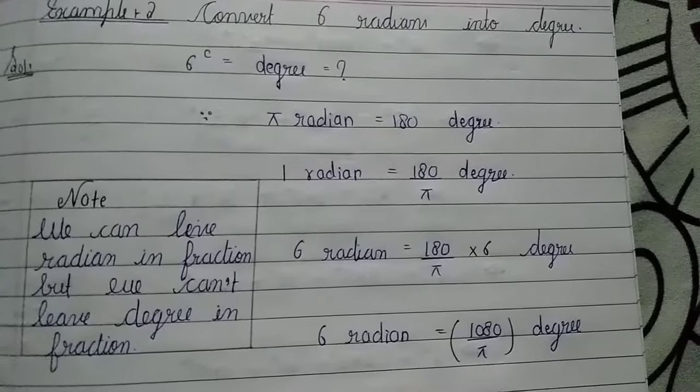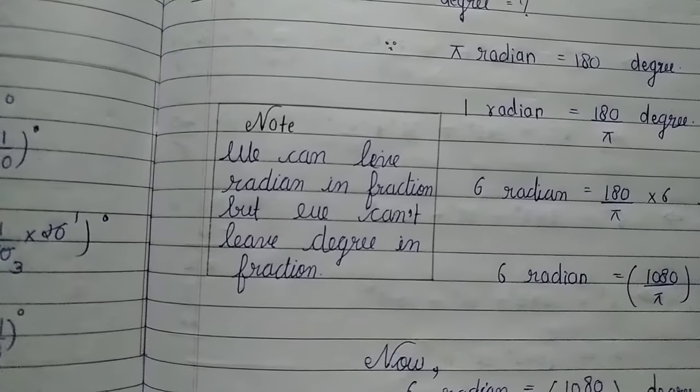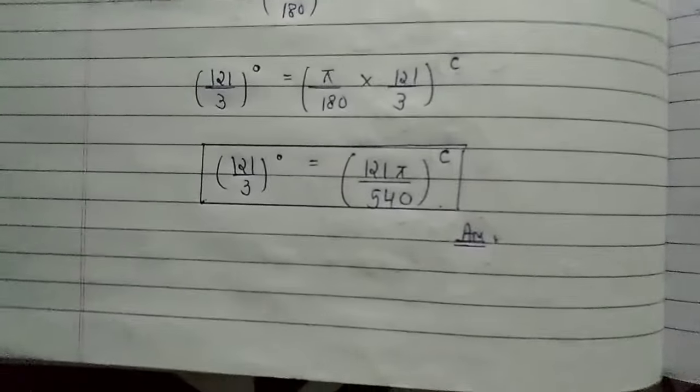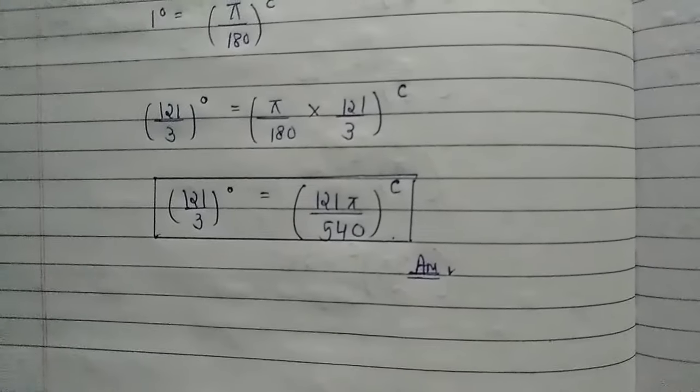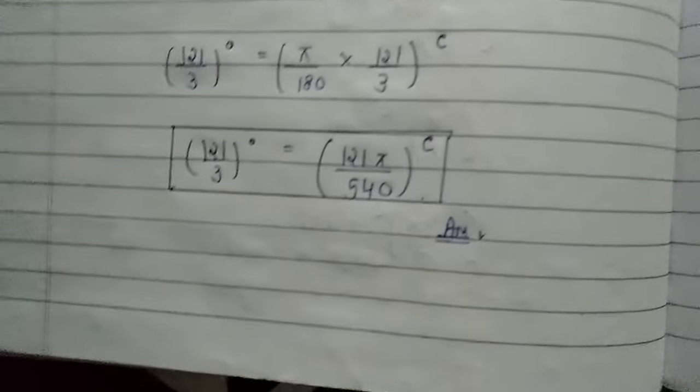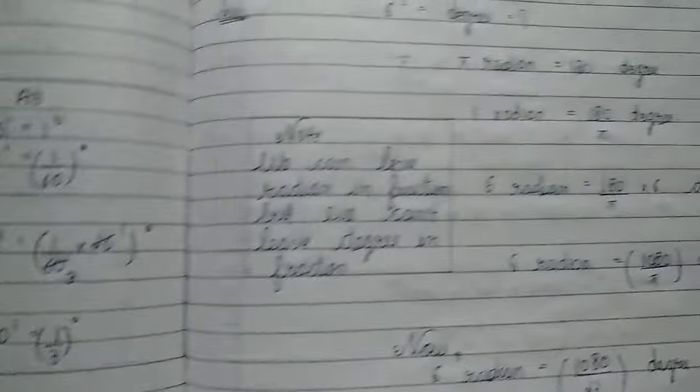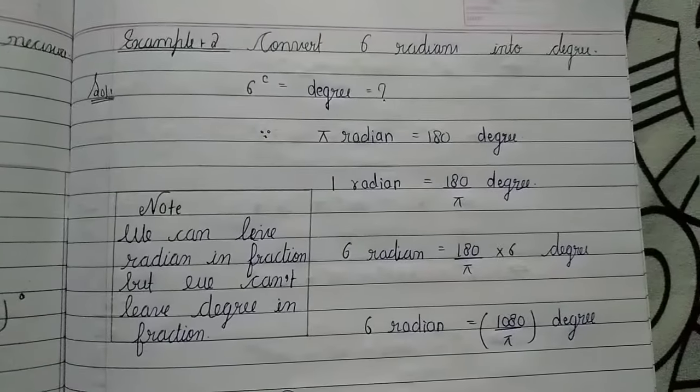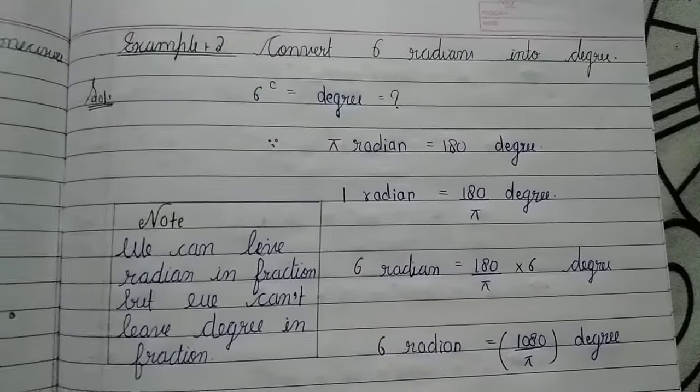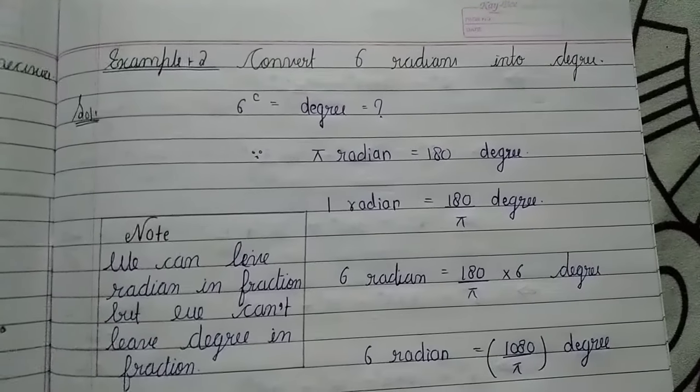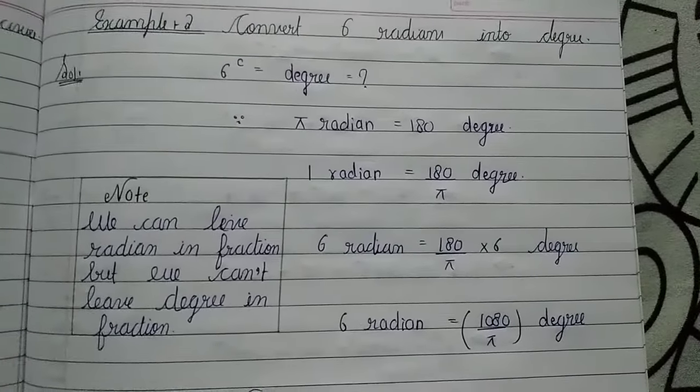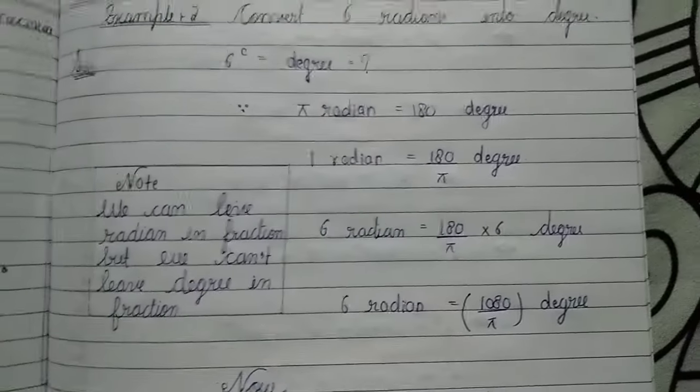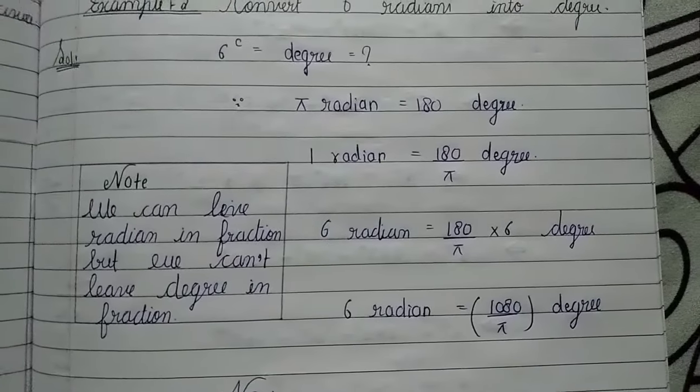Before starting this question, I will tell you a note. We can leave radians in fractions as we have seen in the last example where π was in the denominator. But we cannot leave degree in fractions. We have to get a complete answer because we have to solve further. If we don't have degree, we can leave it in minutes and seconds, that's why we don't leave it in fractions.